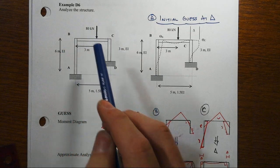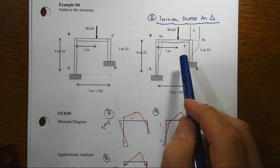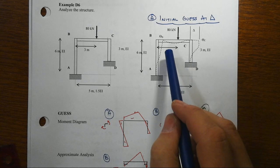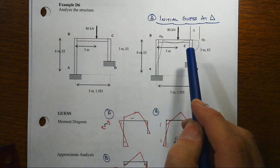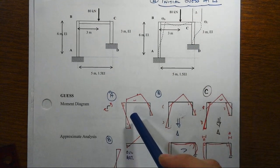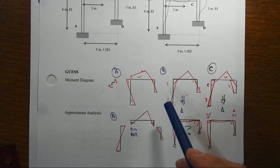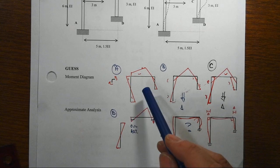With an asymmetrically placed load, initially we thought it might sway to the right because the load was placed to the right. We looked at the moment diagram that might go with that, but came up with a conflict that didn't make a lot of sense.